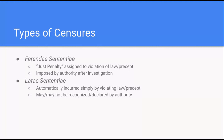A ferendae sententiae means an investigation must take place. First of all, the fault must be found out, an investigation must take place, and then a competent authority, usually a bishop, must assign the penalty. That's different from what's called a latae sententiae. A latae sententiae doesn't have an easy English translation, but it basically means that the penalty is automatically incurred simply by violating the law — meaning no one has to find out about it, no investigation ever has to take place, no authority ever has to impose it. The penalty simply occurs.